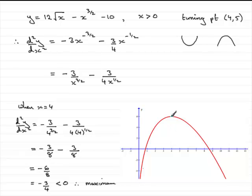6 units up. This is the point 4, 6, our turning point. And you can see it is a maximum. Okay, well that brings us now to the end of this question.